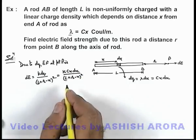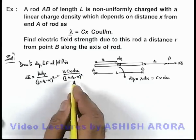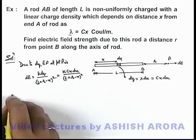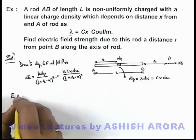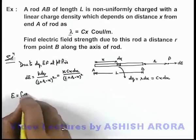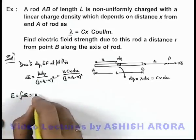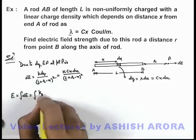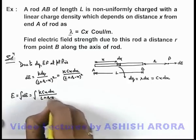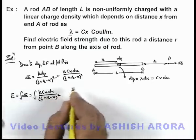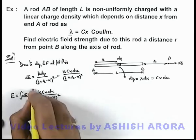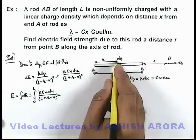We can directly integrate to get the net electric field: E = ∫k·cx·dx / (l + r − x)², with limits of integration from x = 0 to x = l.